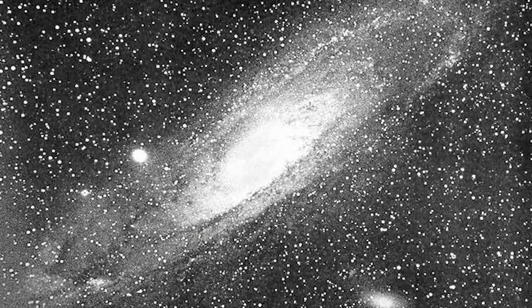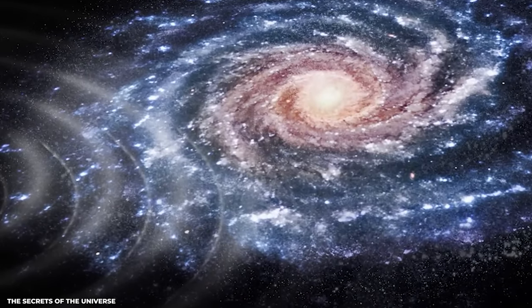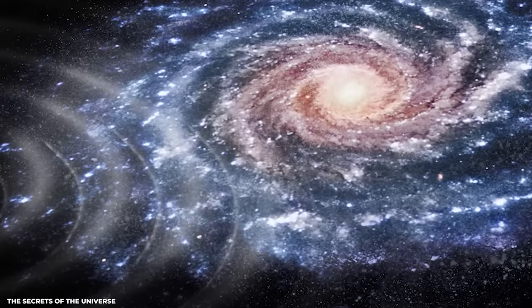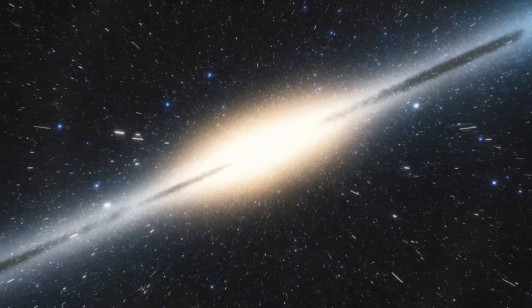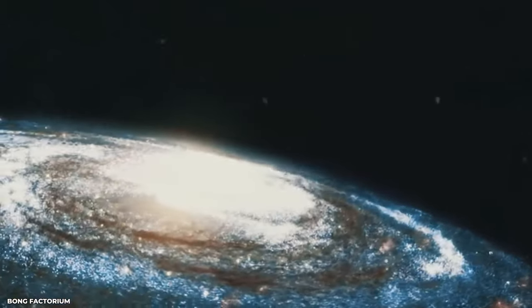Its first detailed picture, taken in the late 19th century, revealed a spiral structure with large gaps between its arms, which helped astronomers understand that the Milky Way is not a solid stellar disk, but a similar spiral whirlpool.